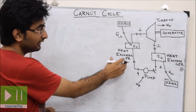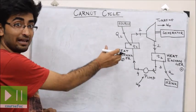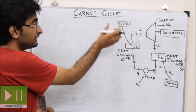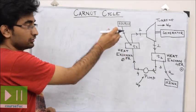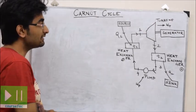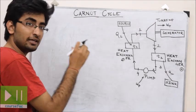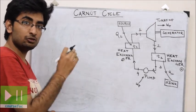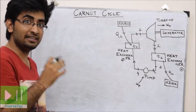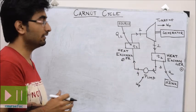In heat exchanger 1, heat is supplied at constant temperature T1 from the source. That is, reversible isothermal heat addition takes place.